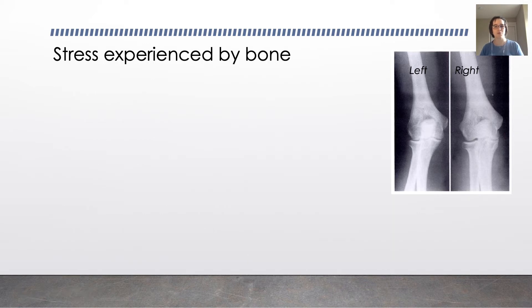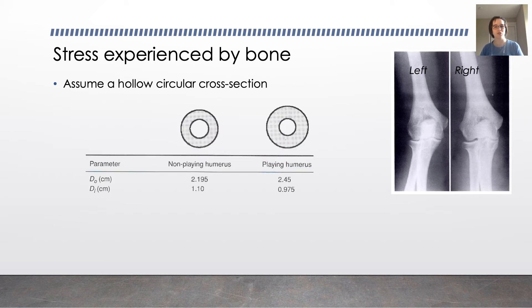So let's consider the stress experienced by the bone. We're going to think back to mechanics and materials. Now we're going to assume a hollow circular cross section for the bone. So we'll assume that the non-playing humerus, the left side, has both a smaller outer diameter and a larger inner diameter than the playing humerus.